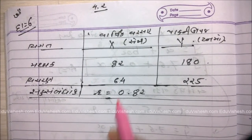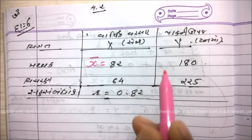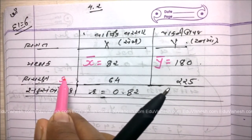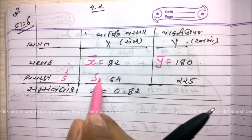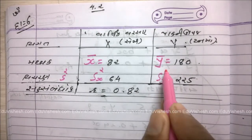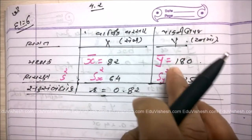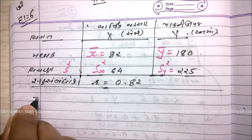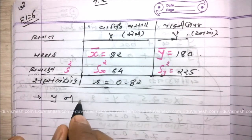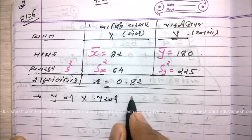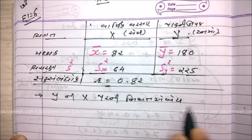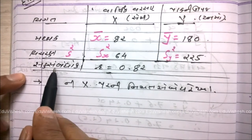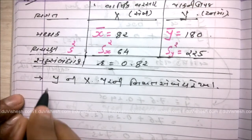સૌ પ્રથમ આ X ની કિંમતોને ધ્યાનમાં રાખી, X (વરસાદ) ઉપ્રથી Y (પાકની ઉપજ) નો અભ્યાસ કરવામાં આવ્યો છે. તો આપણે Y ની X પરની નીયત સ્બંદ રેખા સ્થાપવાની છે. જ્યારે દાખલામાં સહસ્બંધાંક r ની માહિતી આપેલ હોય ત્યારે આ સૂત્ર ઉપયોગ કરીએ.